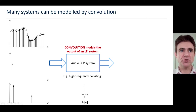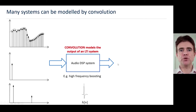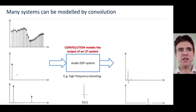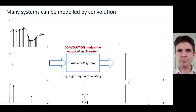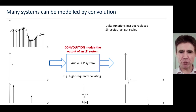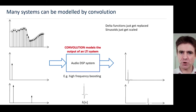In this example, I'm using a system doing audio digital signal processing — high-frequency boosting — modelled by convolution. A function or signal can be composed of delta functions. If we run them through a convolution operator modelling an audio DSP system, what happens is that these delta functions get replaced by a particular response function characteristic of the system. Convolution just takes a delta function and replaces it with another function. Sinusoidal functions, when they go through a convolution operator, just get scaled — and that's why the Fourier representation is so useful.